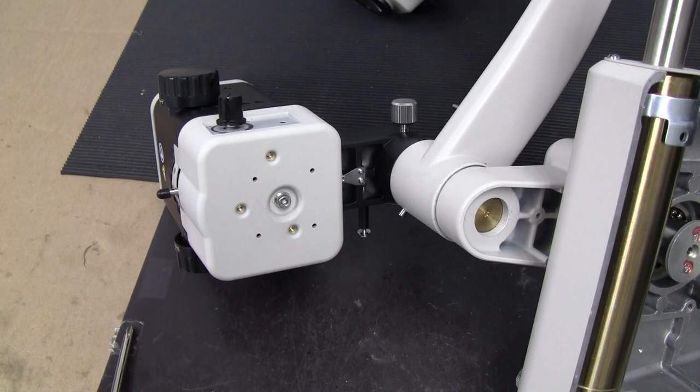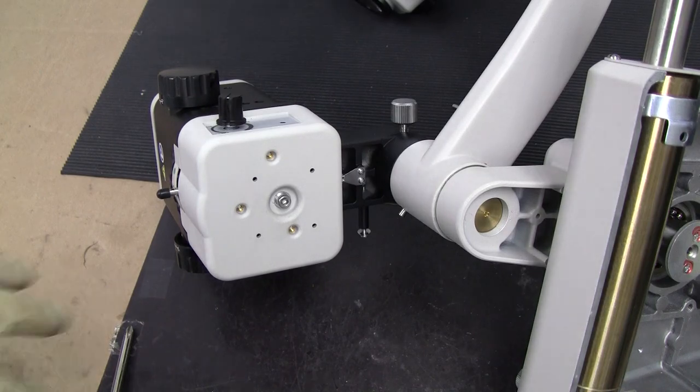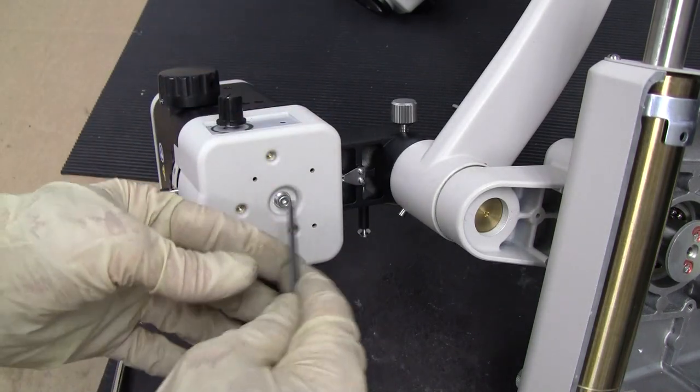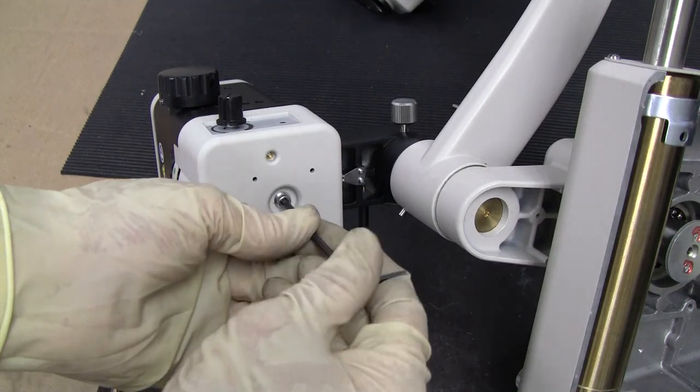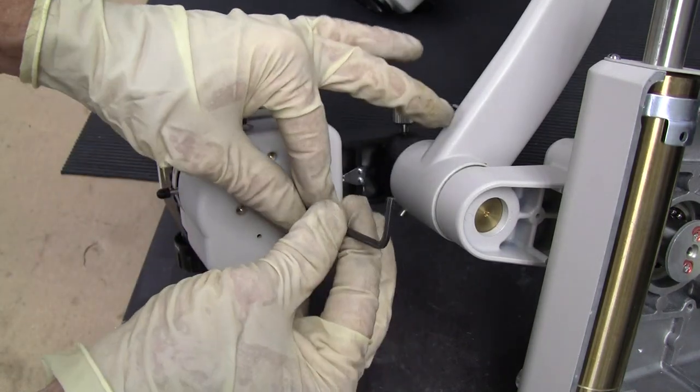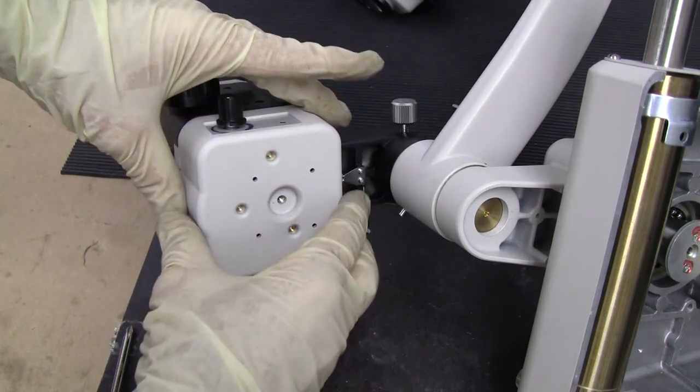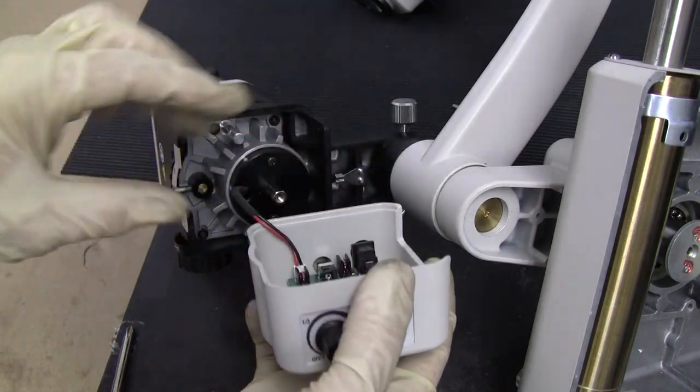I probably should have showed you this earlier, but if you don't know how to take this apart, turn it over to the side and get an Allen wrench to loosen that screw. Take it out and you can pull this off.